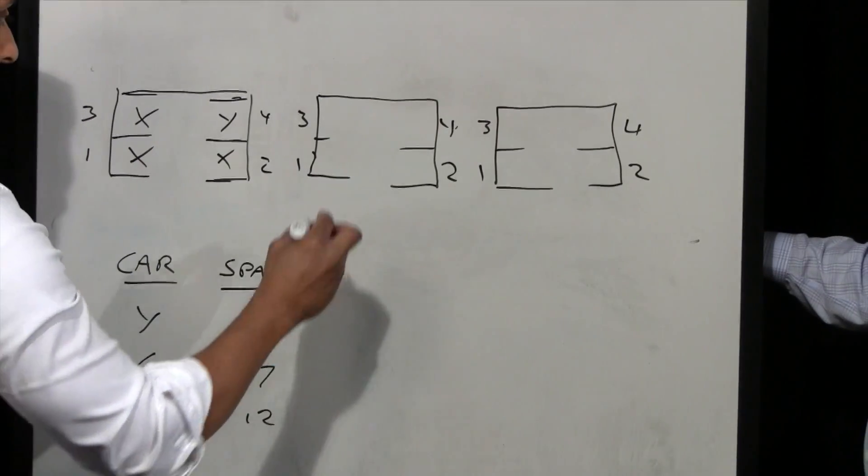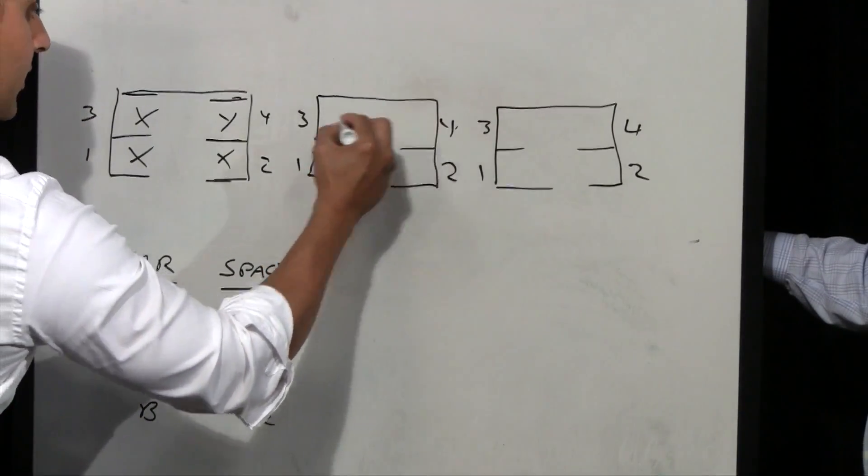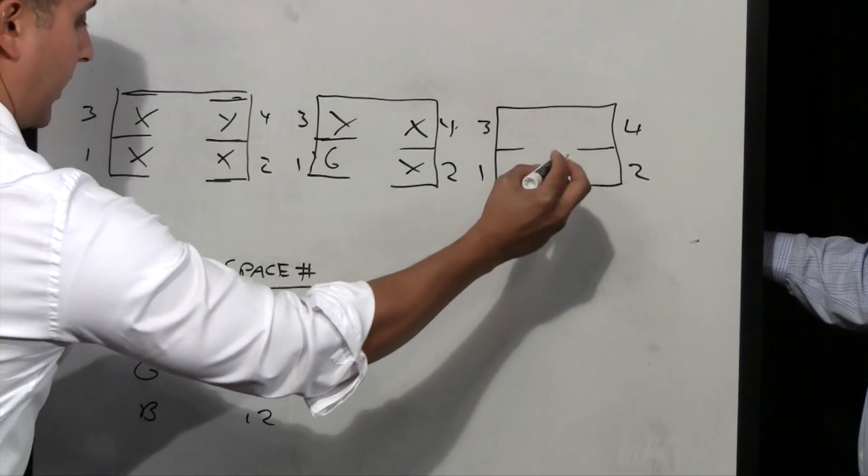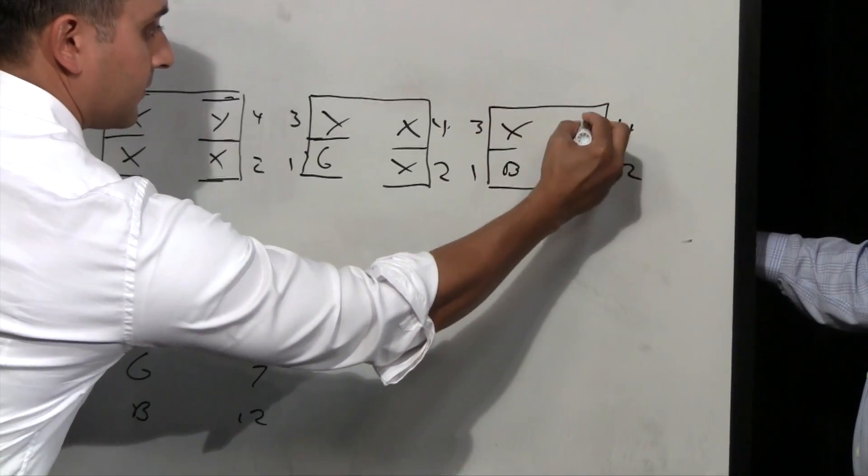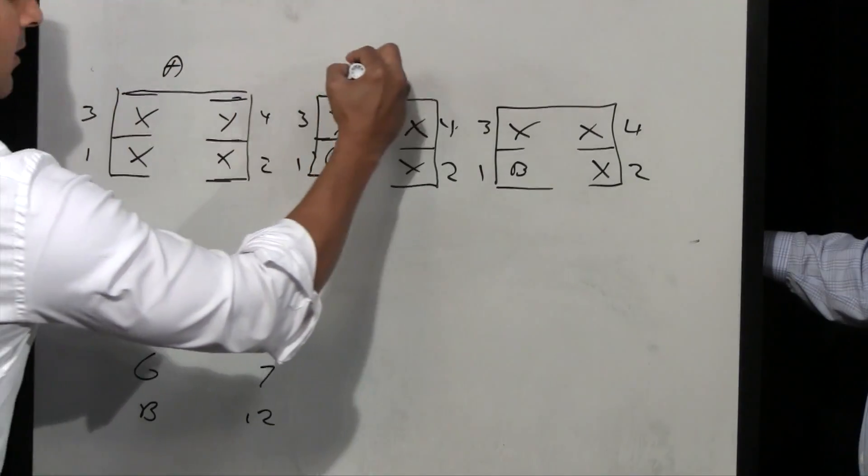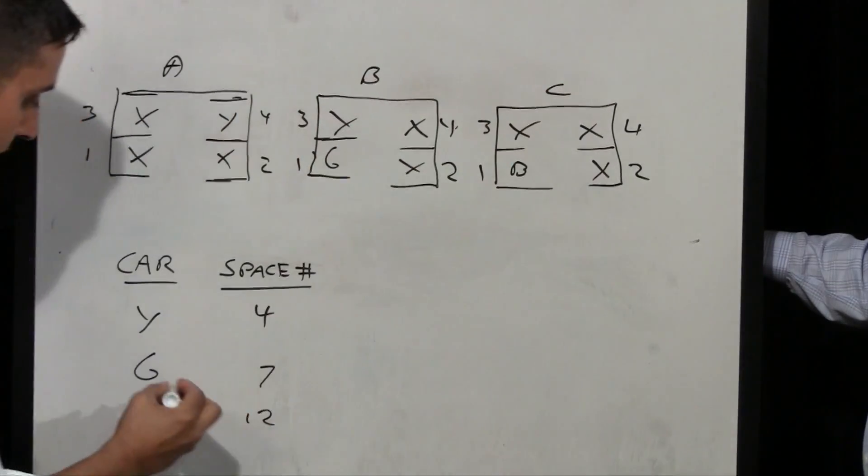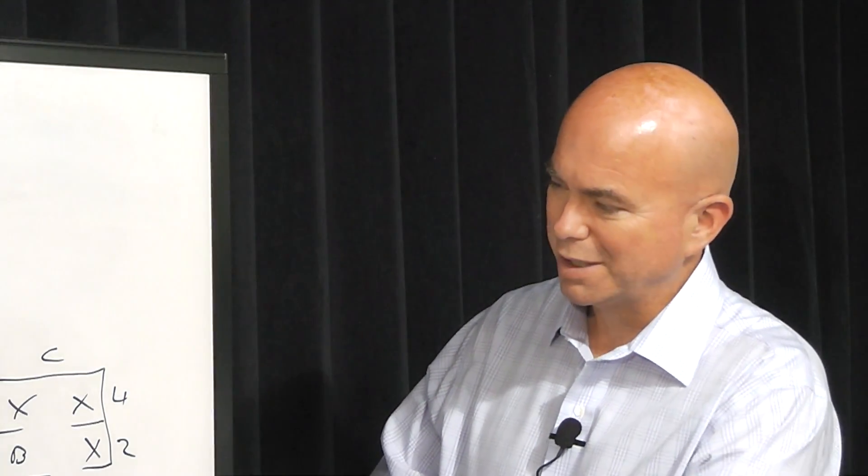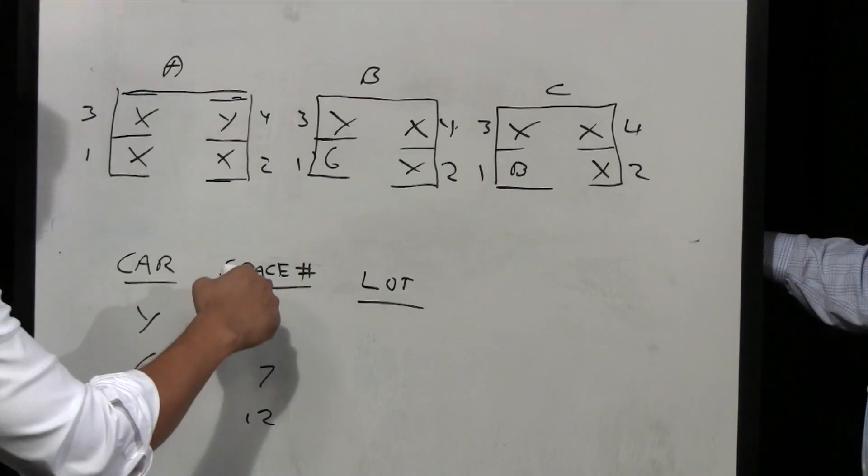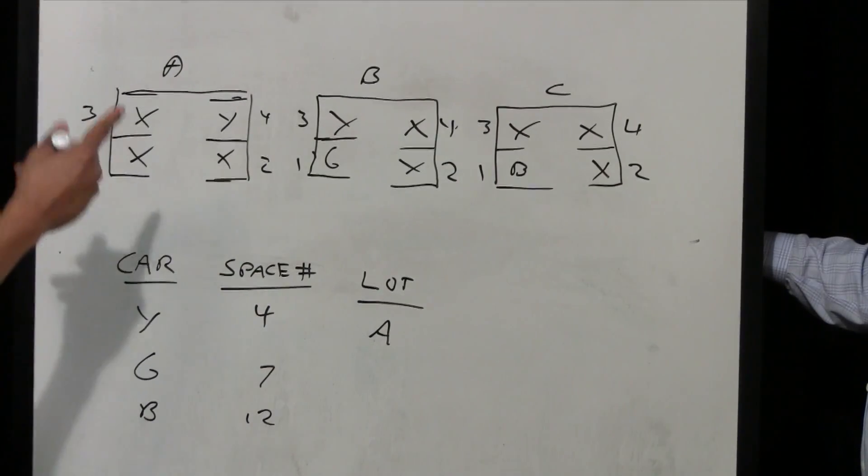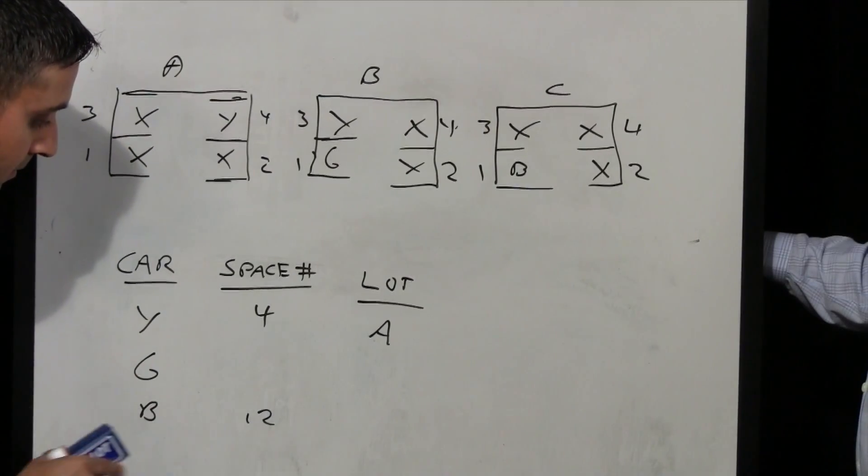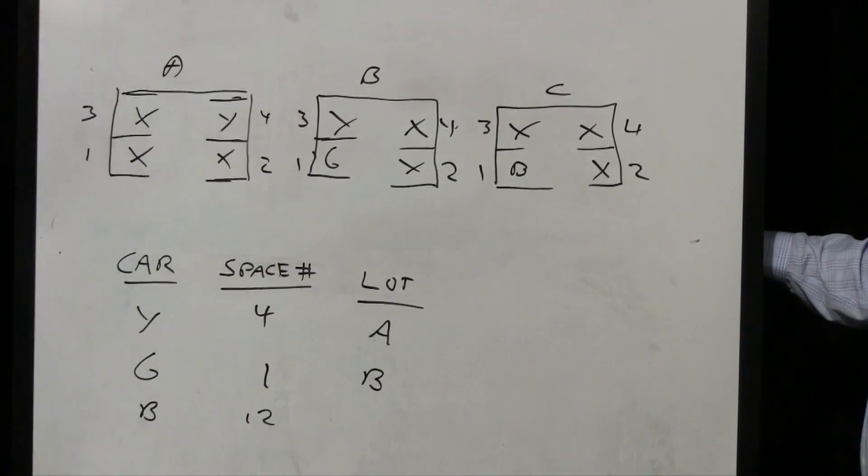Now our green car is going to be here, this car is still parked here, and our blue car is going to be here. Now I have to add another field because this is lot A, lot B, lot C. So the complexity of what I'm trying to track now gets a little bit higher. Now we're going to say yellow is in space 4 and lot A, green is in slot 1 and lot B, and blue is now in slot 1 and lot C.